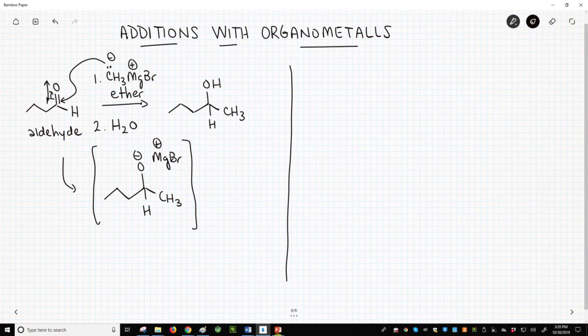This is a bit of a problem because our solvent for the first step is ether. We do not have a proton source. Notice however the second step. Once the first step is complete, water is added. Water is the proton source that will protonate the oxygen and make our final alcohol product.